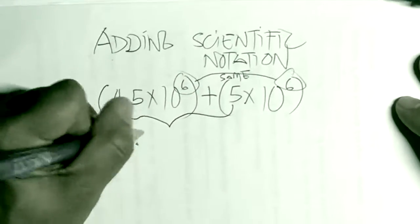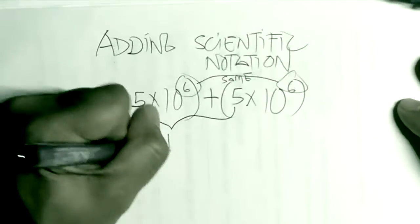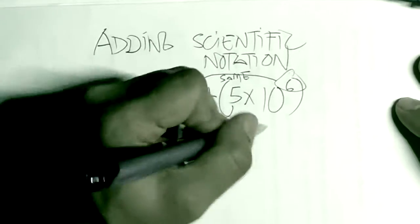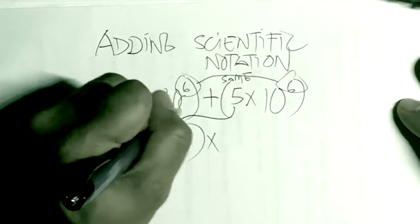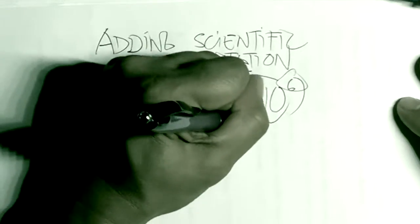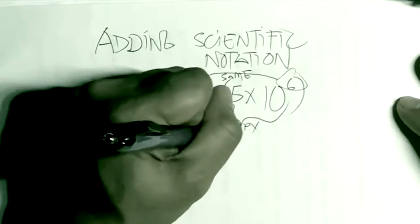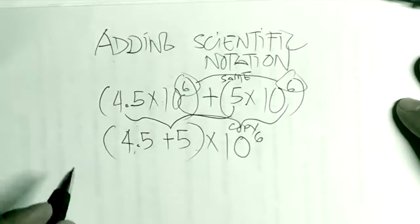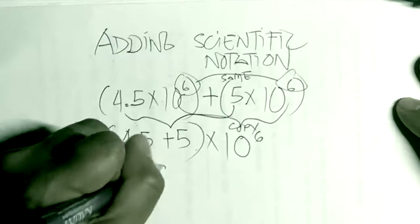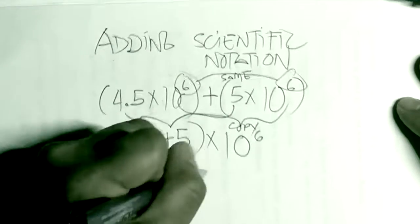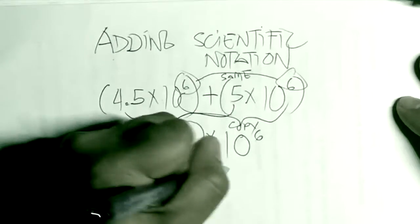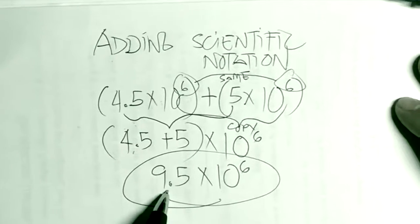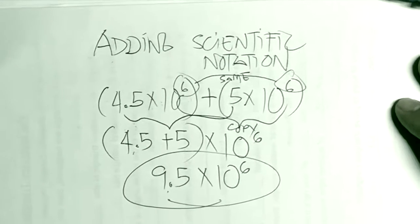For example, 4.5 plus 5 — simply add them and copy the power of 10 since they're the same. So 4.5 plus 5 is 9.5, bring down times 10 to the 6. That gives us the sum in scientific notation.